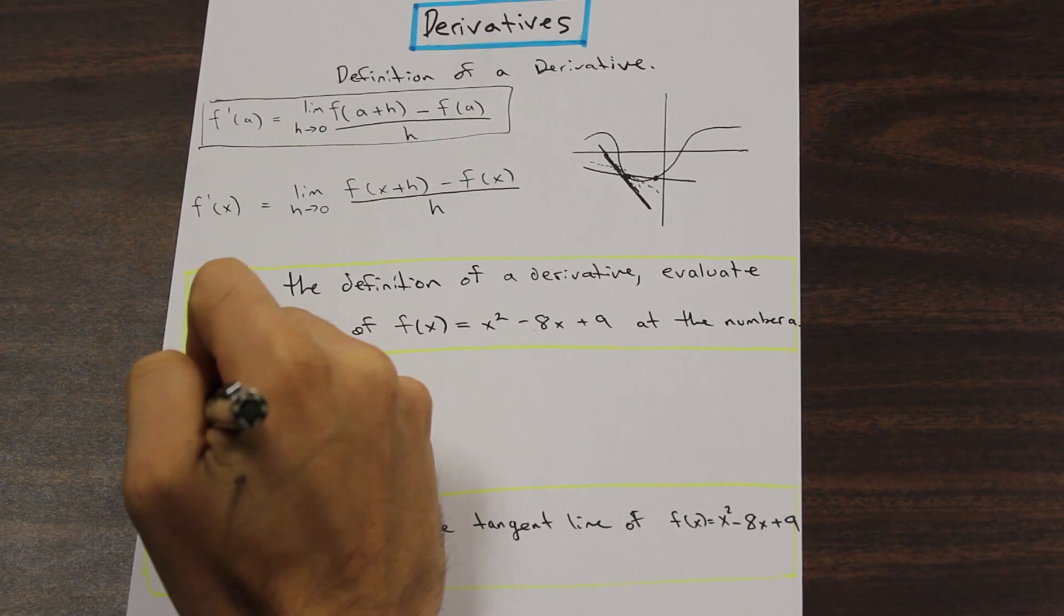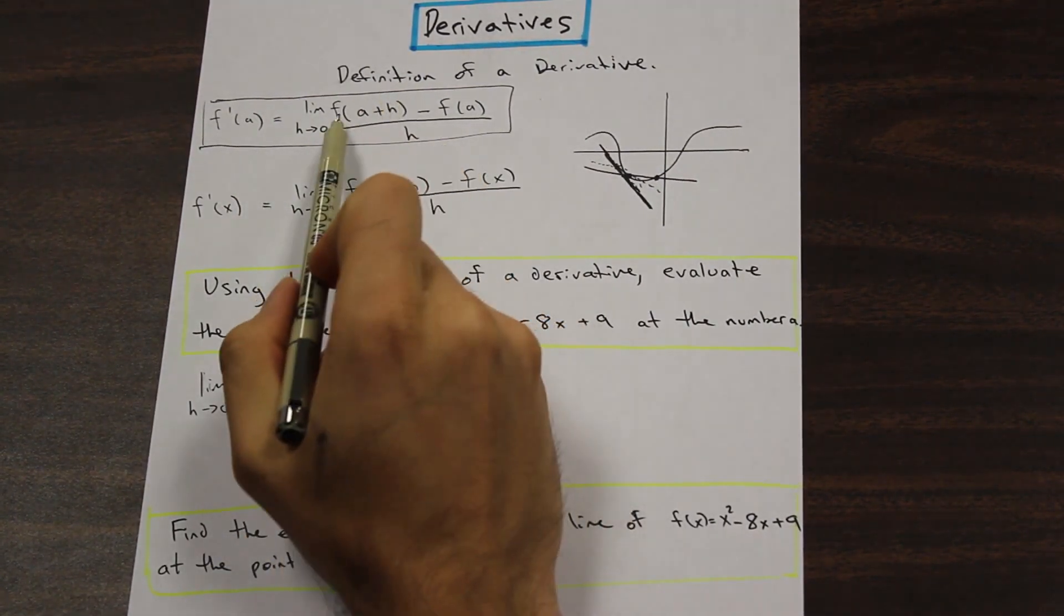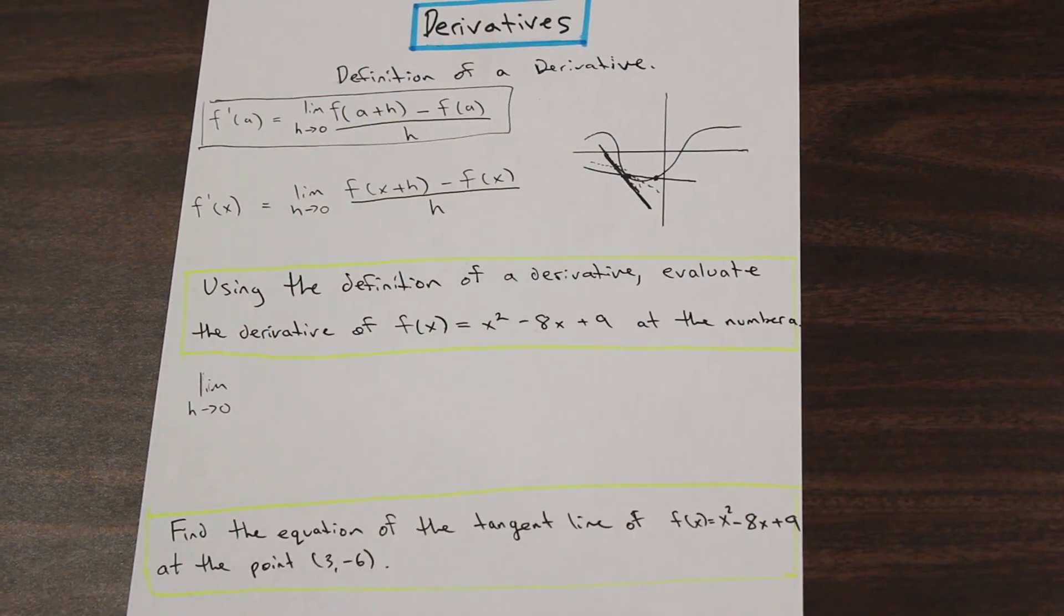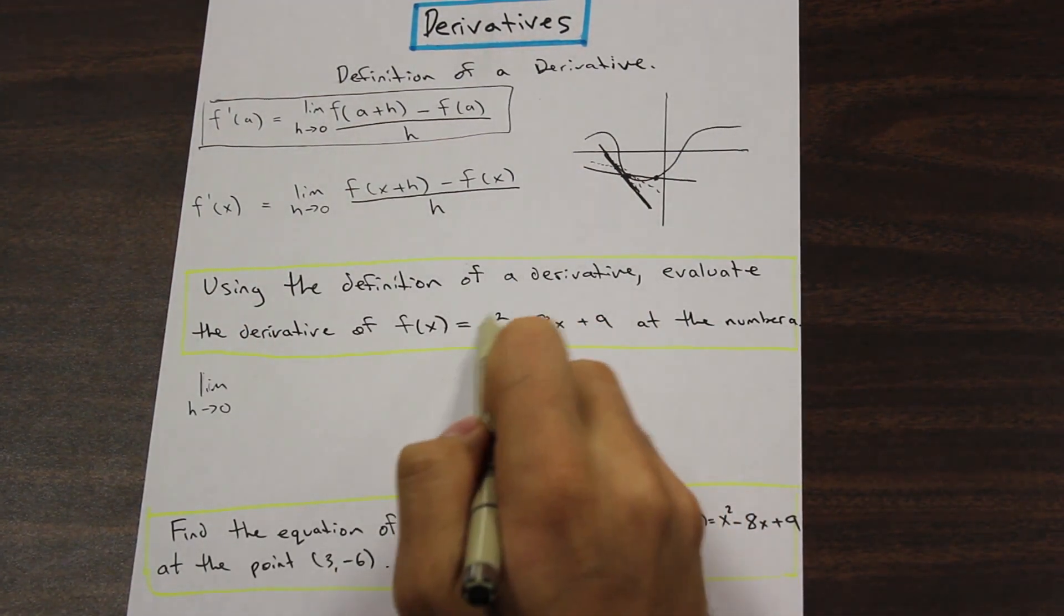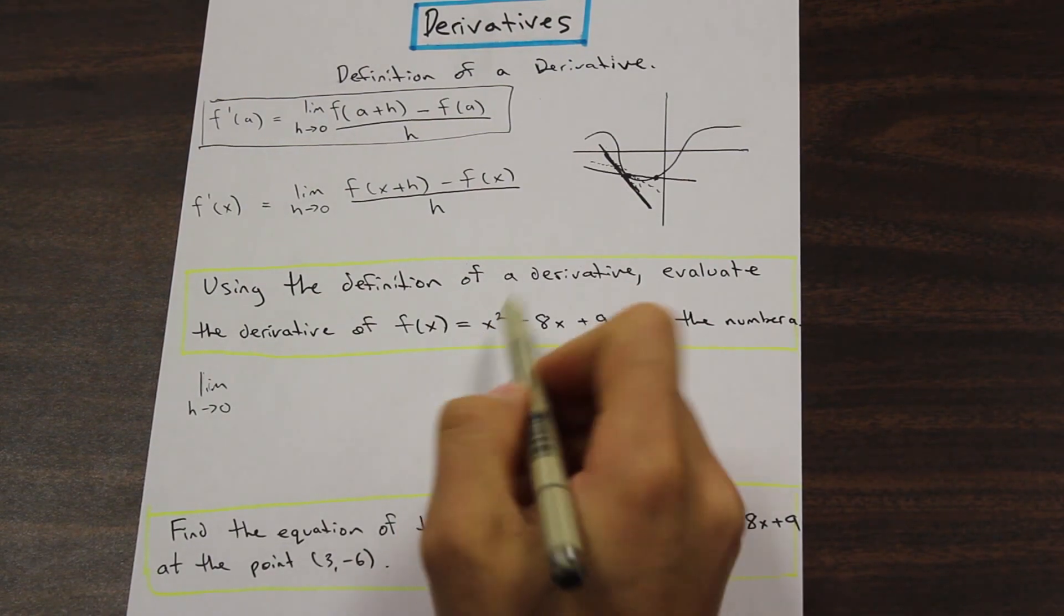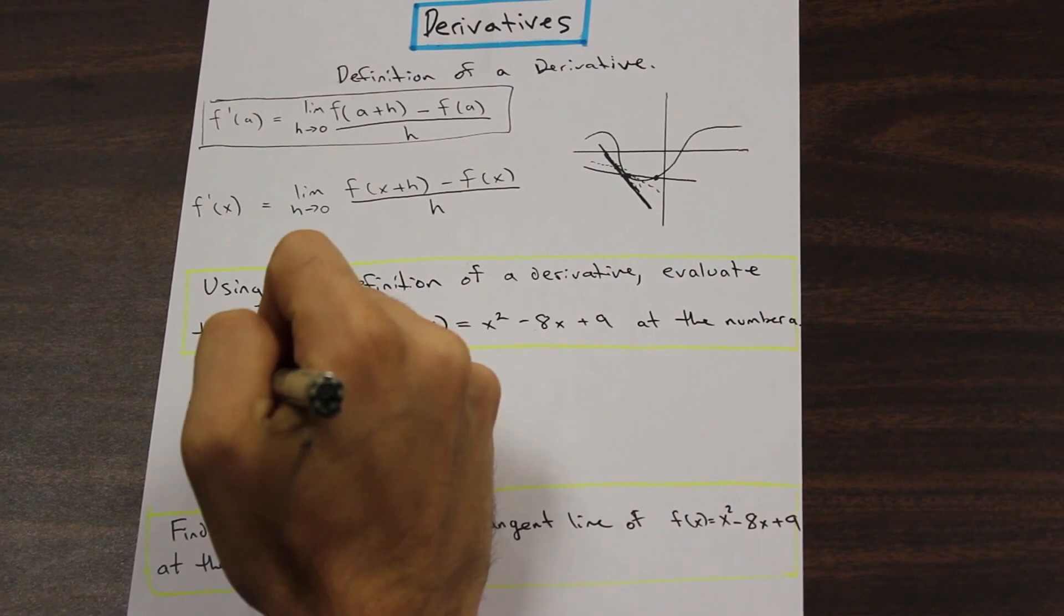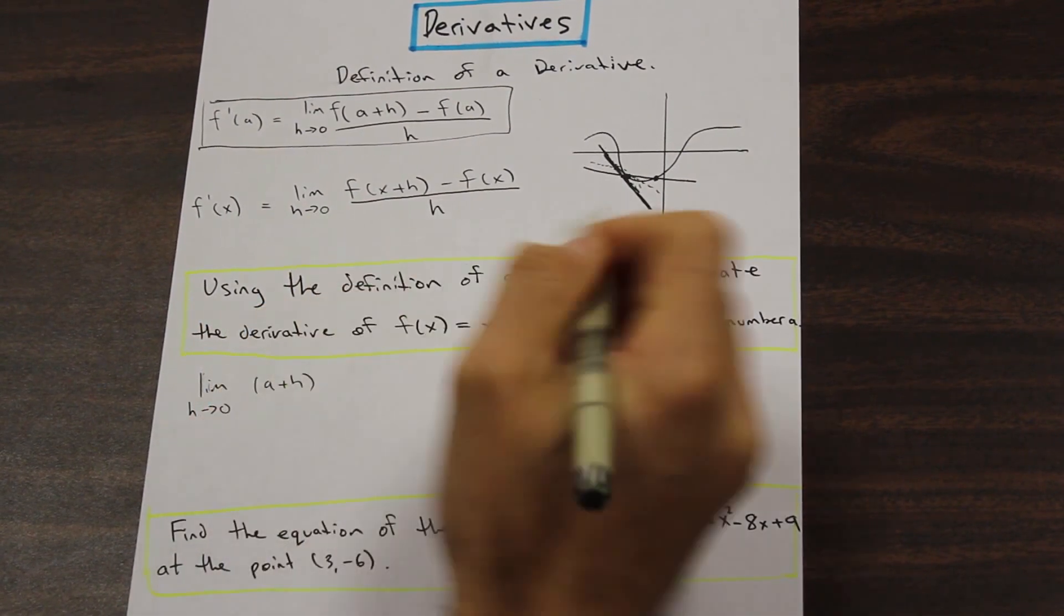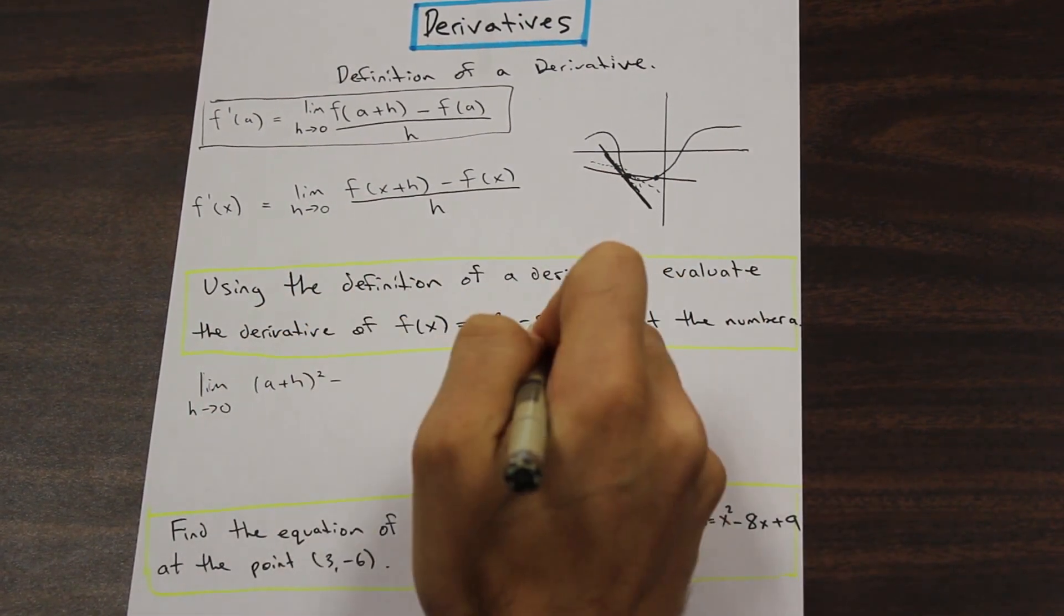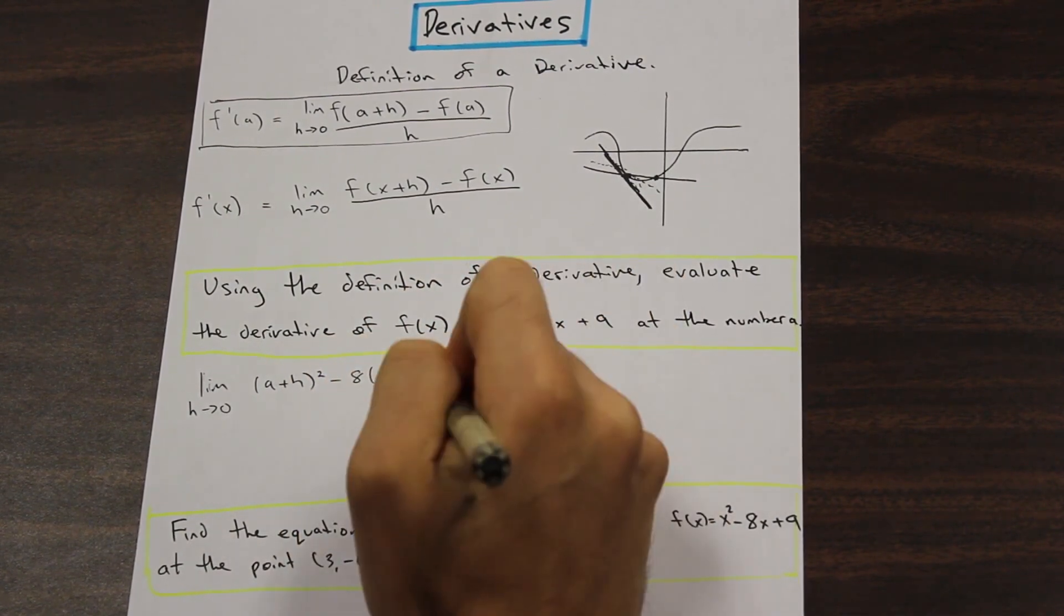By writing out, limit as h approaches 0. And for the first part here, we have f of a plus h. We are going to take this here, and for every time that we have an x, we're going to plug in a plus h. So let's go ahead and do that.